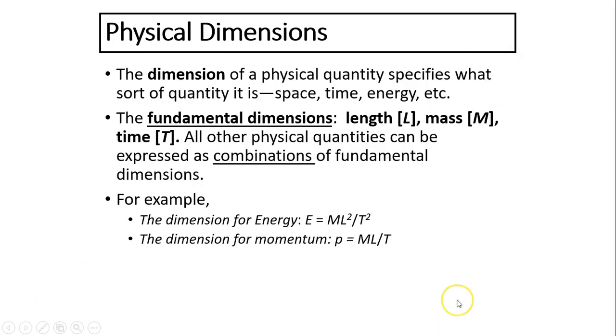Physical dimensions. The dimension of physical quantities specifies what sort of quantity it is. Is it time? Is it space? Or is it mass? The fundamental dimensions are three corresponding to three fundamental quantities - length, mass, and time. Length is L, that's the dimension. Dimension for mass is M. Dimension for time is T. All the other physical quantities can be expressed by combining these fundamental dimensions.